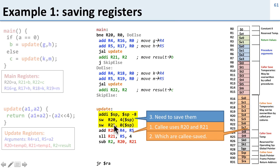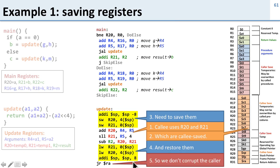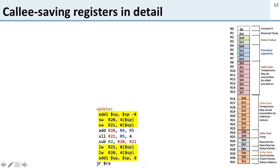Now we've saved the values of registers 20 and 21 from our caller — from main — before it called update. So main calls update, and the first thing we do in update is save the values that main had for registers 20 and 21. Then we do our calculation, which writes over registers 20 and 21, but that's okay because we saved them. Now when we're done with our calculation we restore those registers, loading both of them back. This way, when we return, registers 20 and 21 are exactly as they were when main was running, even though the update procedure used those registers.